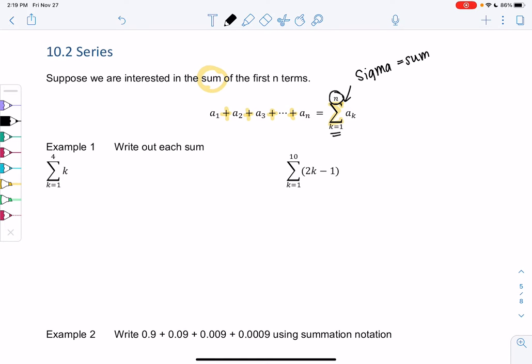So the first example says find the sum from k equals 1 to 4 where the terms are k. So it just means we're going to plug in the first four terms. I stop at 4 because the sum tells me to stop at 4. And so my first term is k, and we plug in 1. So my first term is 1. My second term is 2, 3, 4. So that's how we would write out that sum.